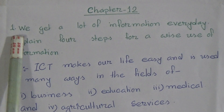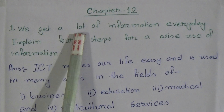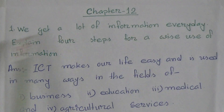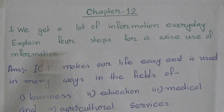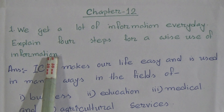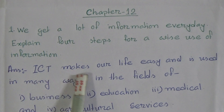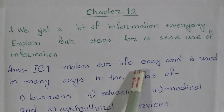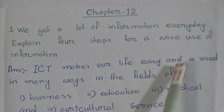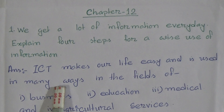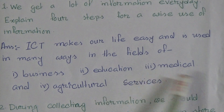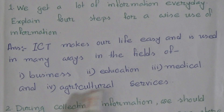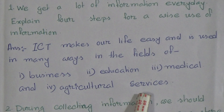Question 1: We get a lot of information every day. Explain 4 steps for a wise use of information. Answer: ICT makes our life easy and is used in many ways in the fields of business, education, medical and agriculture services.